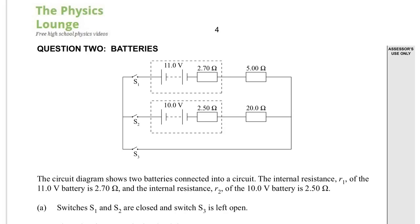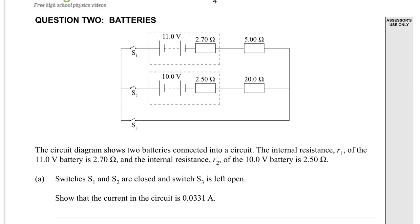Let's go down and see what we get. Switches S1 and S2 are closed, switch S3 is left open, so we're dealing with just this top portion when S3 is open.